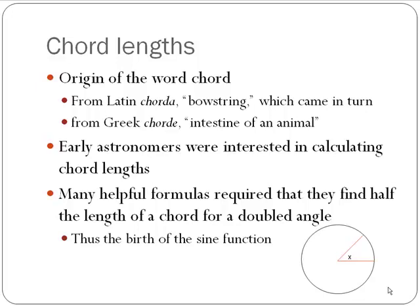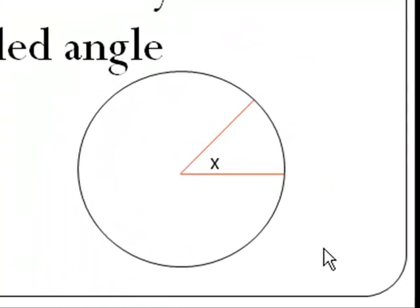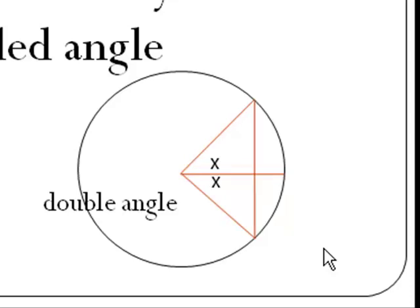Early astronomers were interested in calculating chord lengths, and many helpful formulas they used required they find half the length of a chord for a doubled angle. So if we've got an angle x here, they would double the angle and then form the chord there. You can kind of see the bowstring and the bow. Then half of that chord length is what they would use — that is what we know of as the sine function. If the radius of the circle is one, the length of that half chord is the sine.